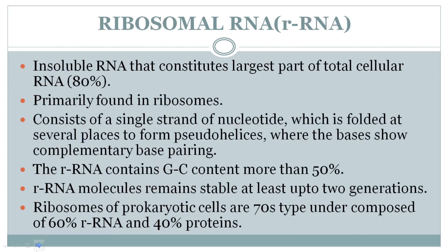The second type is Ribosomal RNA (rRNA), also called insoluble RNA. It constitutes about 80% of the total cellular RNA and is found primarily in ribosomes, which are attached to the rough endoplasmic reticulum. rRNA consists of a single strand of nucleotides folded at several places to form pseudo-helices, where the bases show complementary base pairing.